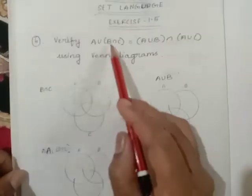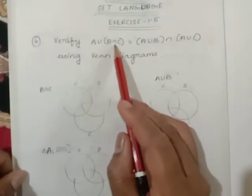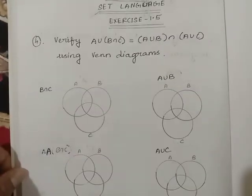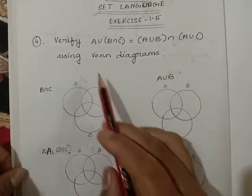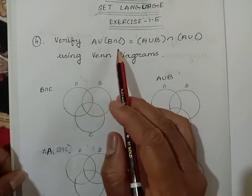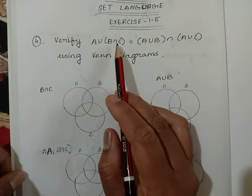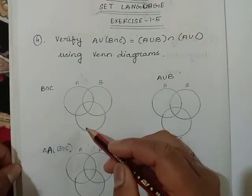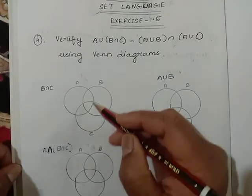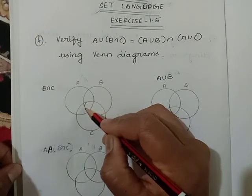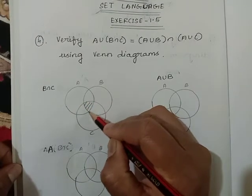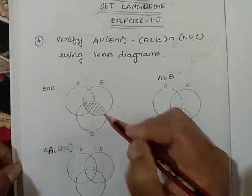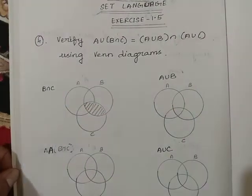First, what is inside the brackets we will solve — that is B intersection C. What is B intersection C? The common portion between B and C gives you B intersection C.